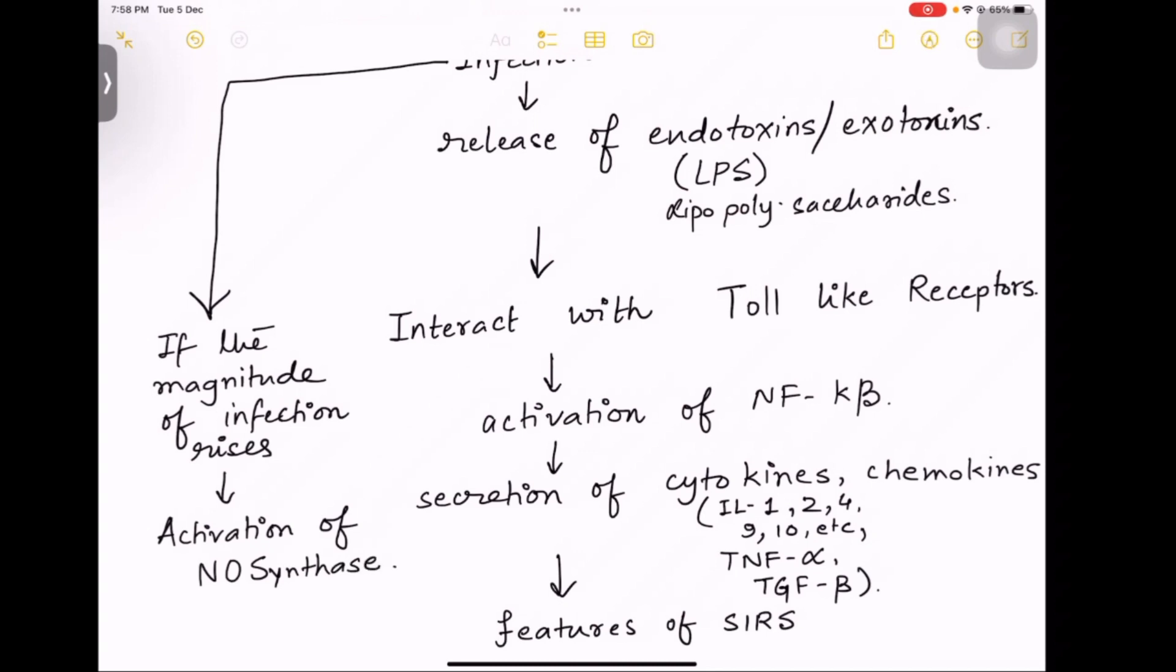Now this infection, if the magnitude of this infection rises, then there will be activation of nitric oxide synthase. Now usually when there is infection in the body, then there is vasoconstriction. But if nitric oxide synthase is produced, this will lead to the synthesis of more and more nitric oxide.